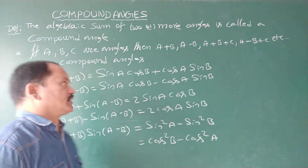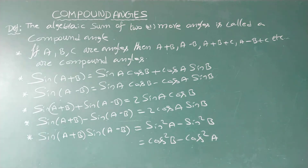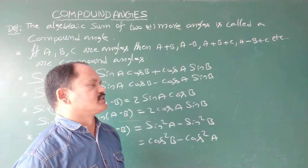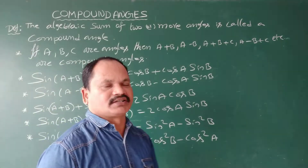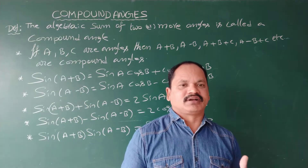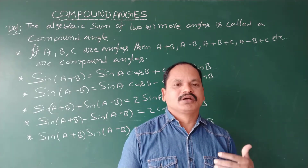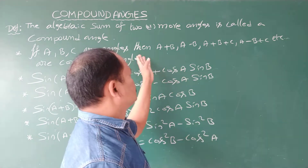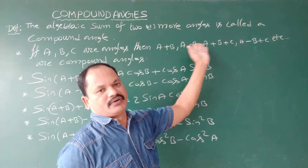Now we are going to the definition for compound angles. The algebraic sum of two or more angles is called a compound angle. If A, B, C are angles, then A plus B, A minus B, A plus B plus C, A minus B plus C — like that. So the algebraic sum of two or more angles is said to be compound angles. This is the representation of compound angles.